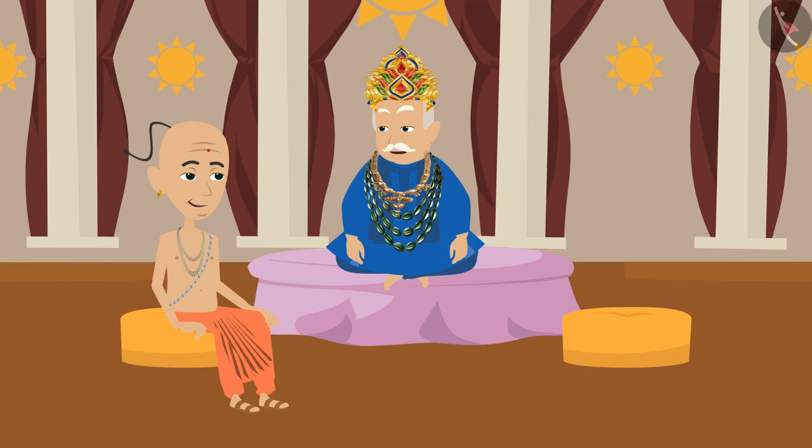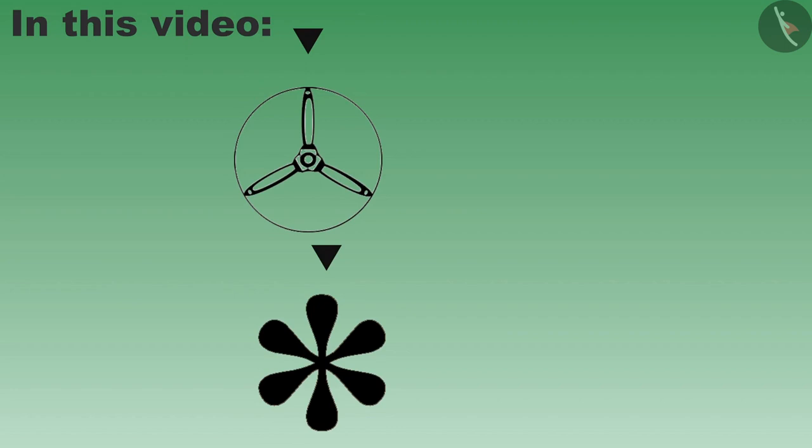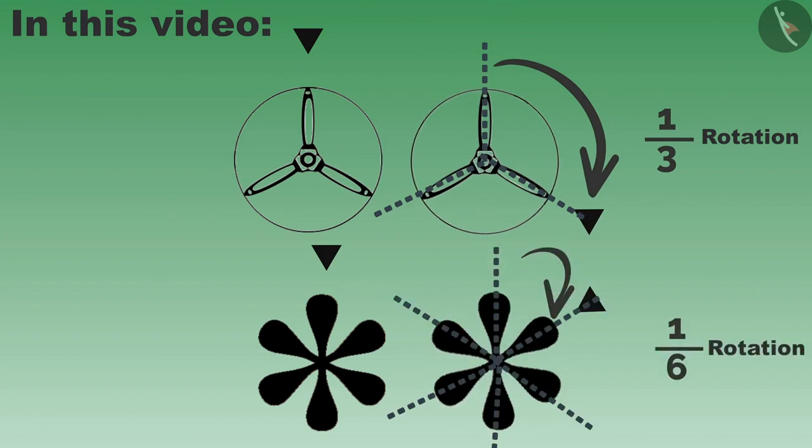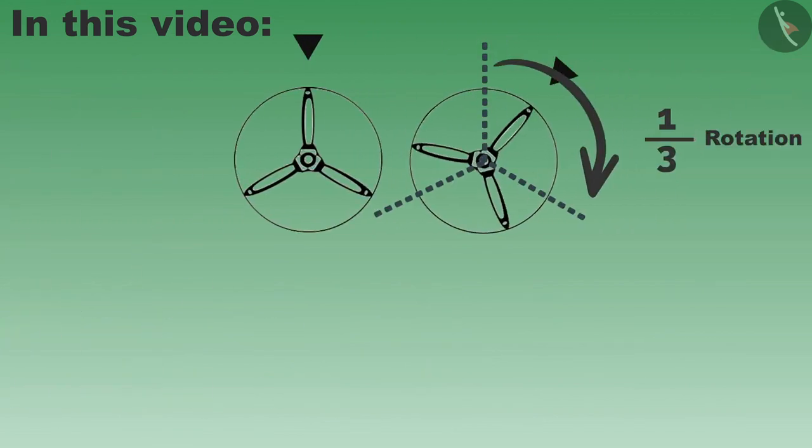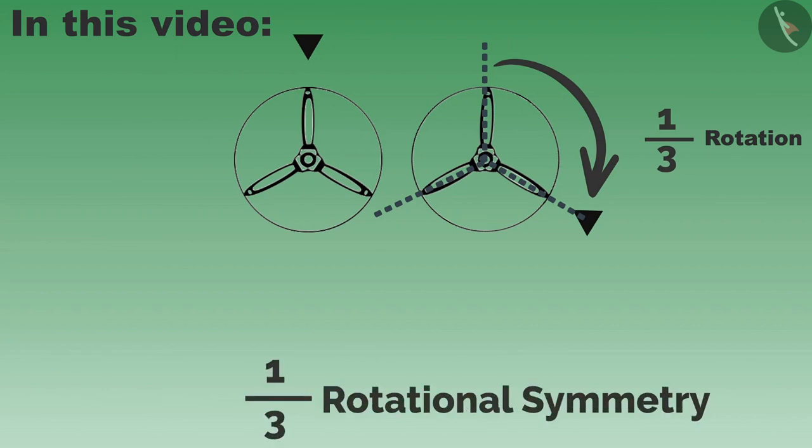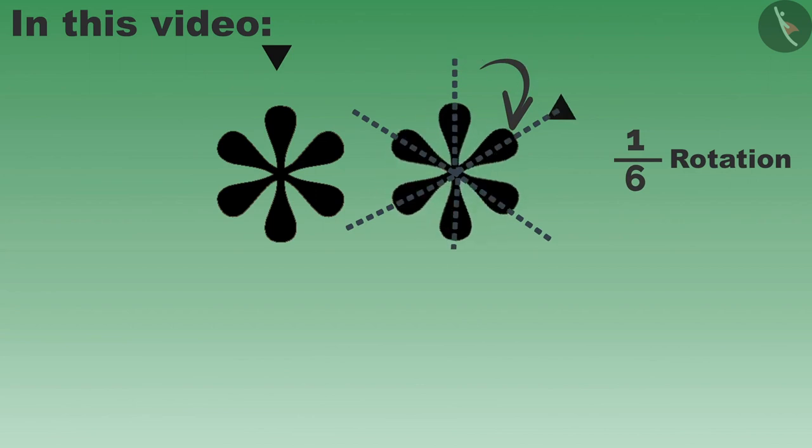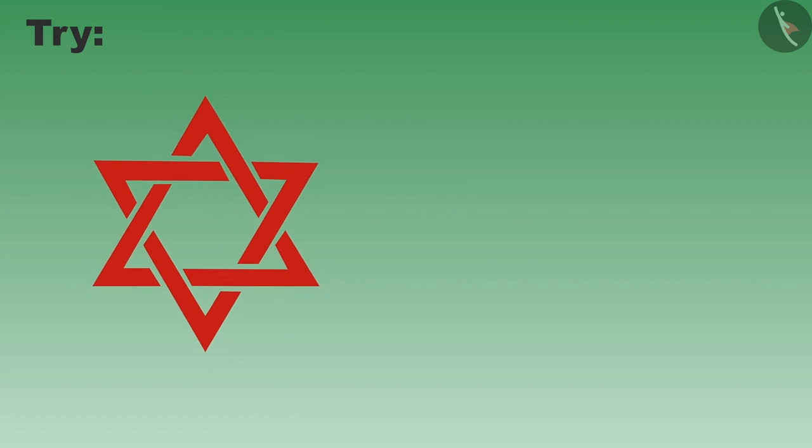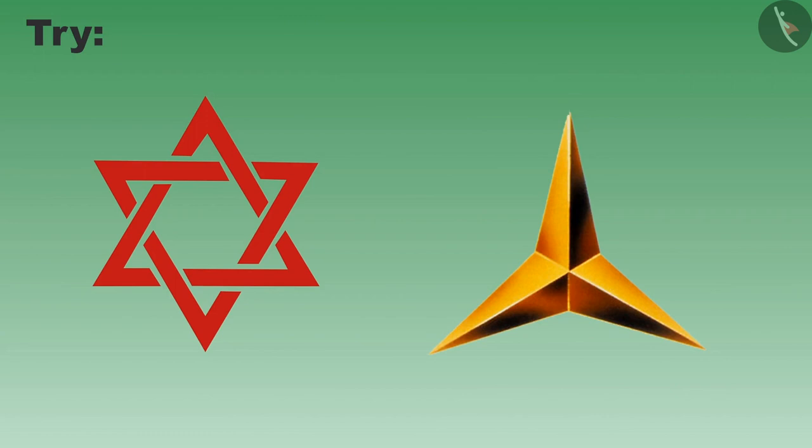So in this video we have learned about objects and their shapes which do not change after one-third and one-sixth rotation. The shapes which look the same even after one-third rotation represent one by three rotational symmetry. You also try to find similar objects around you and find their rotational symmetry. Thank you.